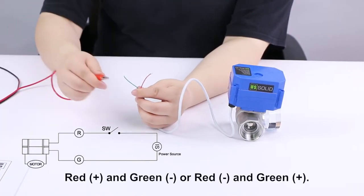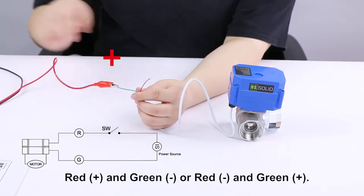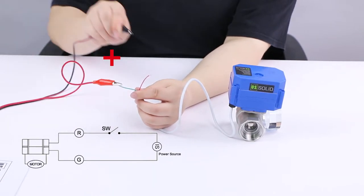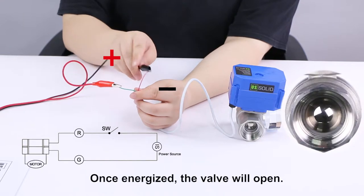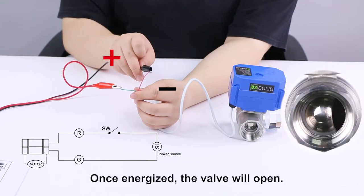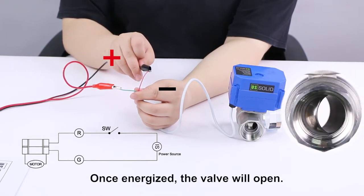You can connect the red wire with either positive or negative pole. Once energized, the valve will open, and it will remain open until the valve is de-energized.